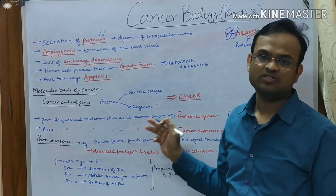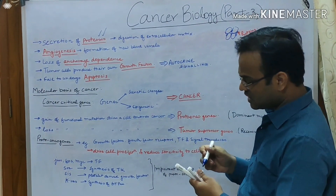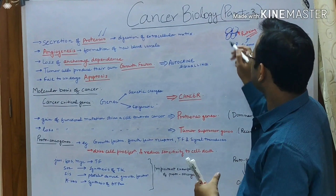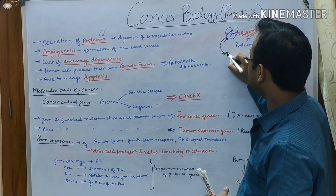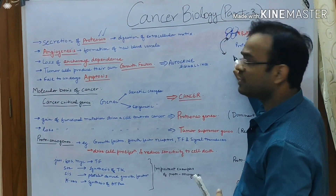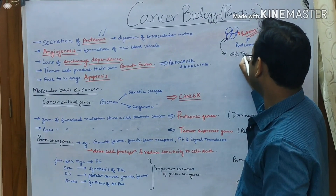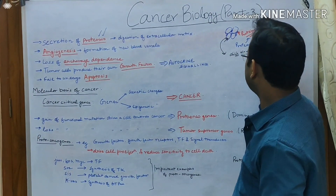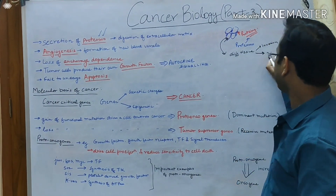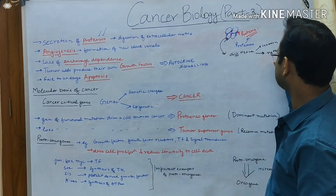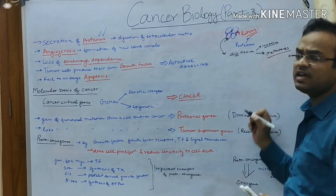Cancer cells have the property of secreting proteases. After the secretion of proteases, these proteins of the extracellular matrix will get dissolved. There will be nothing to hold all these cells together, so a cancer cell can come off or detach from the tissue and move to a different tissue by invasion or also by metastasis.